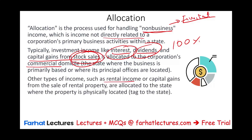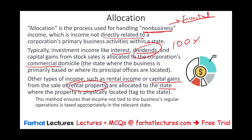However, rental income or capital gains from the sale of rental property are allocated to the state where the property is physically located. For example, if you are domiciled in Texas but have a rental property in California, that rental income is taxed in California — not in the home state — in contrast to interest, dividends, and capital gains, which are taxed in the home state. This ensures income is tagged to the relevant state appropriately.